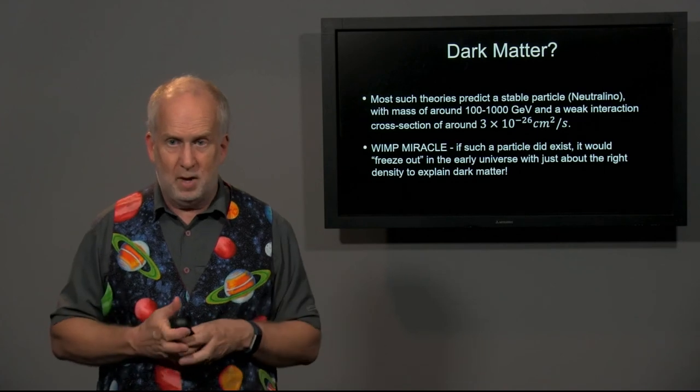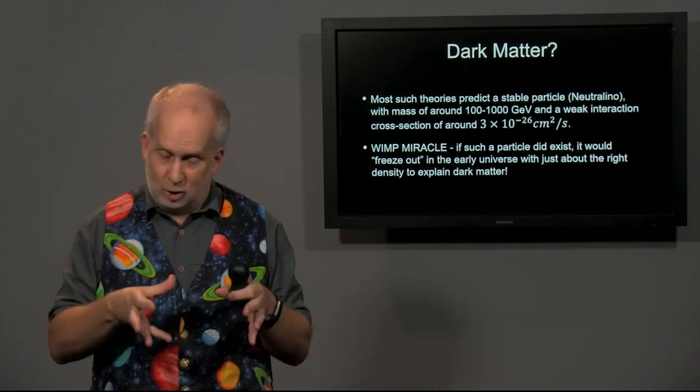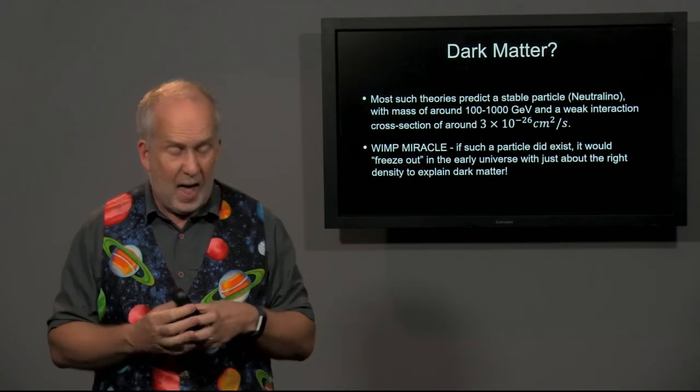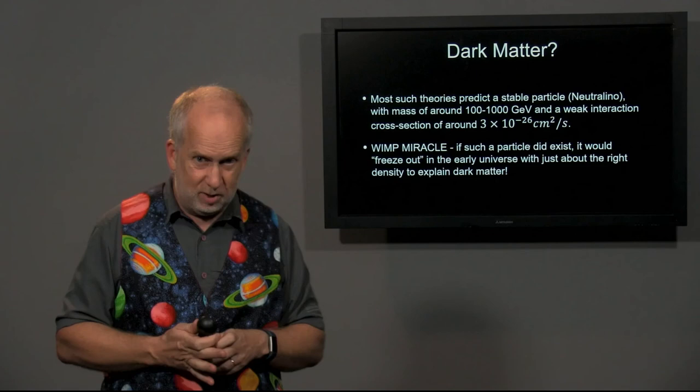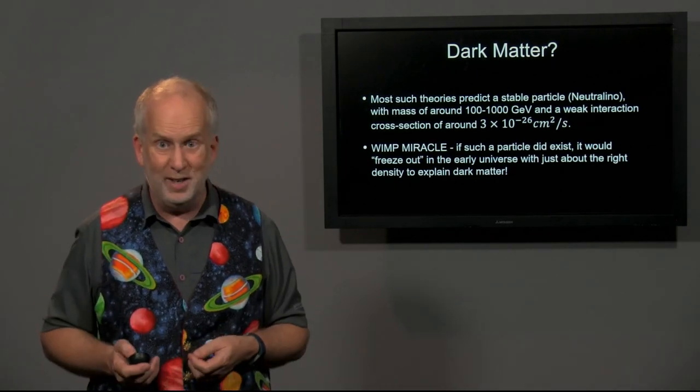So we've got this candidate, these WIMPs, and if they exist, the supersymmetry predicts they should exist, and if they exist, that explains several problems in particle physics, and they have just the right properties to give you the right amount of dark matter today. So, wow, it's got to be a good candidate, right?